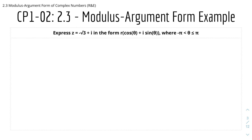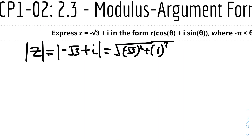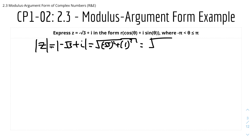First we have to find the modulus. The modulus of z = |−√3 + i| = √((−√3)² + 1²). The negative doesn't matter because we square it, so √(3 + 1) = √4, therefore the modulus is 2. Checking with a calculator: √(root 3 squared plus 1 squared) = 2. We also need to find which quadrant the complex number is in.